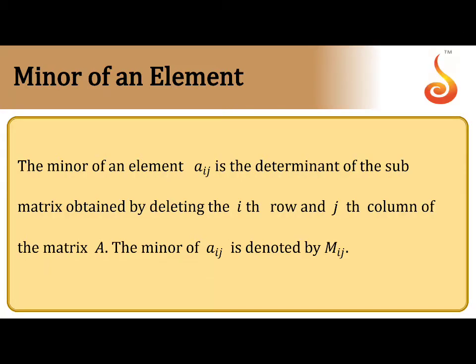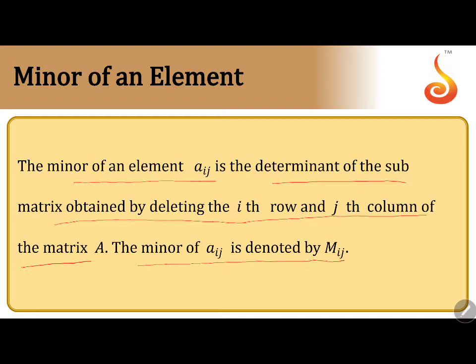Minor of an element. The minor of an element Aij is the determinant of the submatrix obtained by deleting the ith row and jth column of the matrix A. The minor of Aij is denoted by Mij. I will explain this with one example.